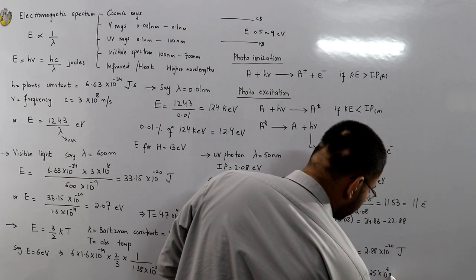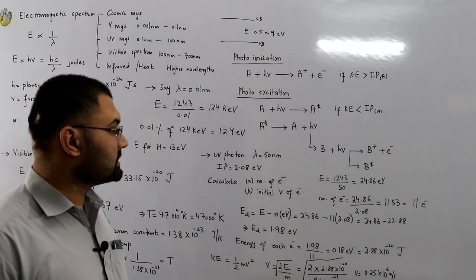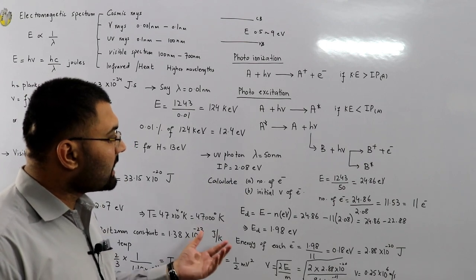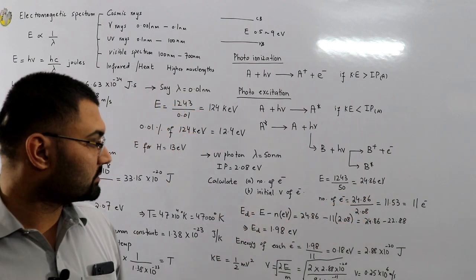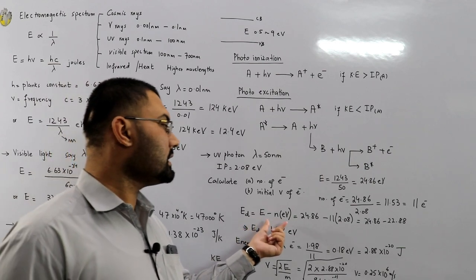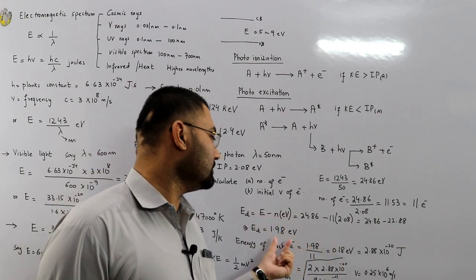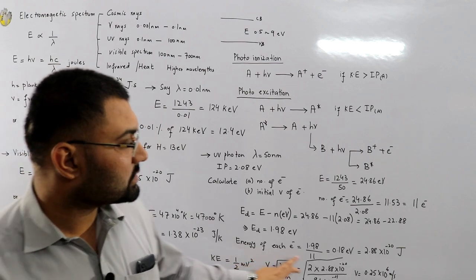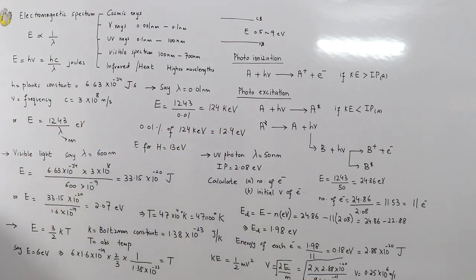So that's what a numerical example looks like: a photon's wavelength and the ionization potential are given; find how many electrons are emitted and their initial velocity. Find total energy divided by ionization potential for the electron count, find the leftover energy difference, distribute it among the ejected electrons, convert to joules, then use the kinetic energy formula to find velocity.